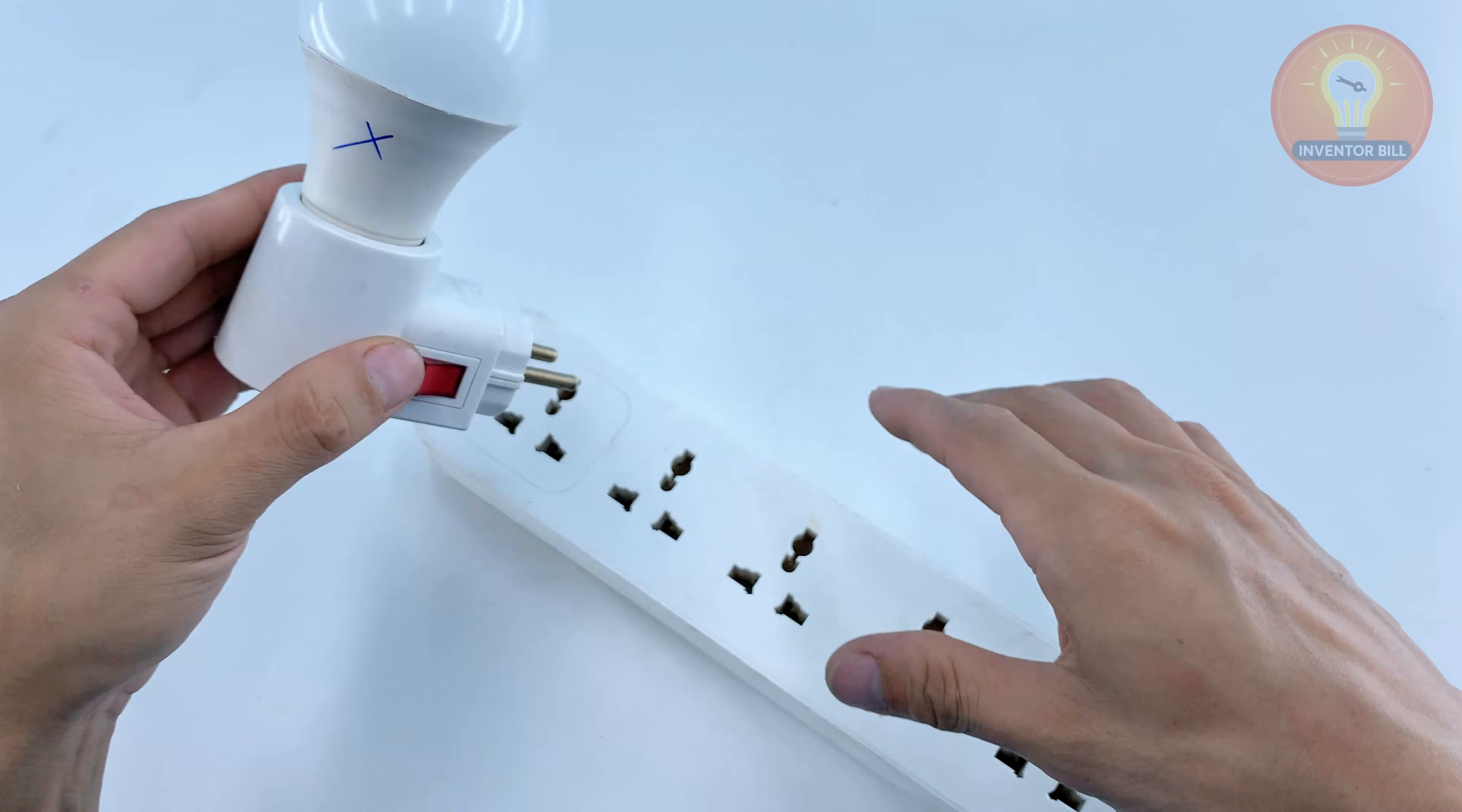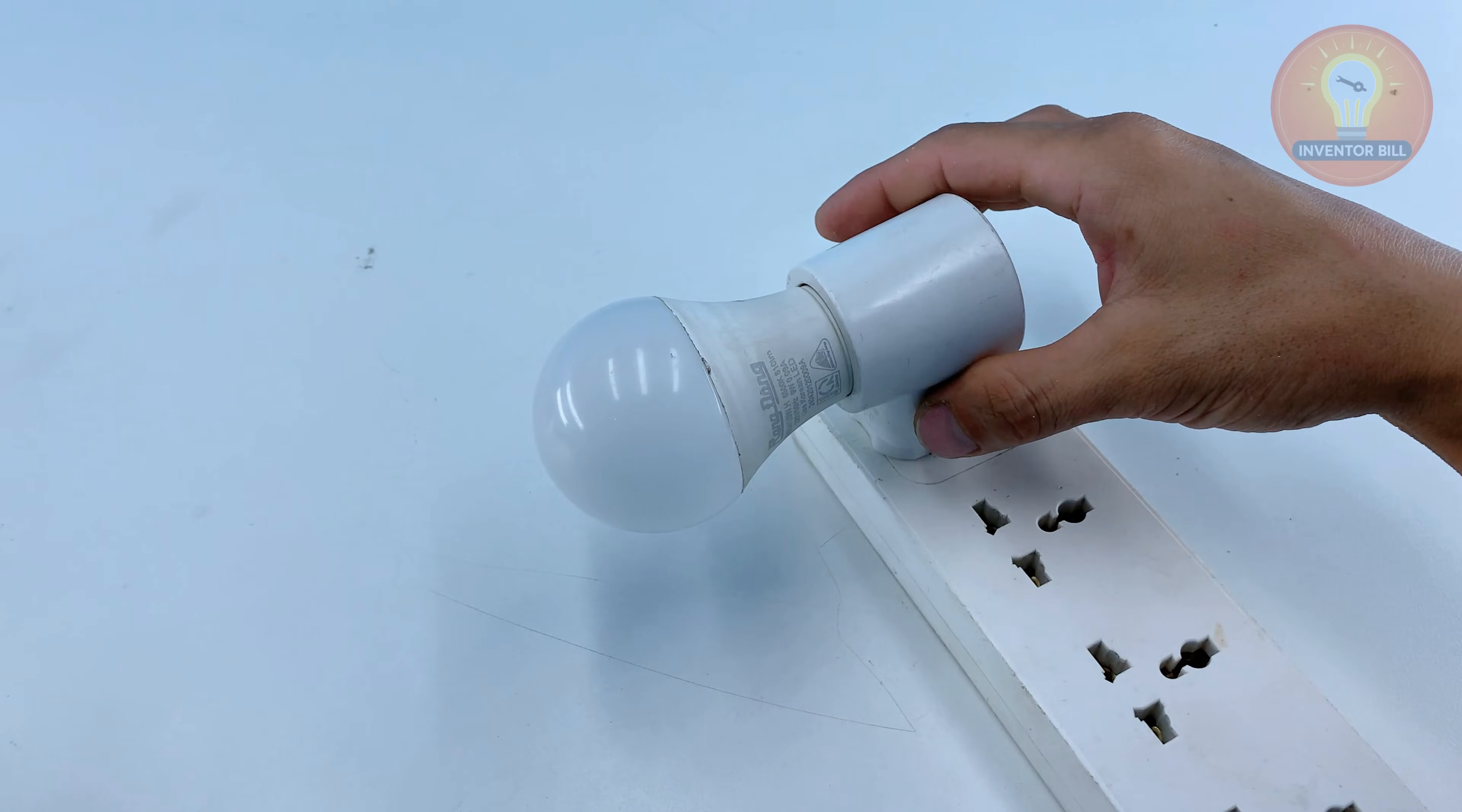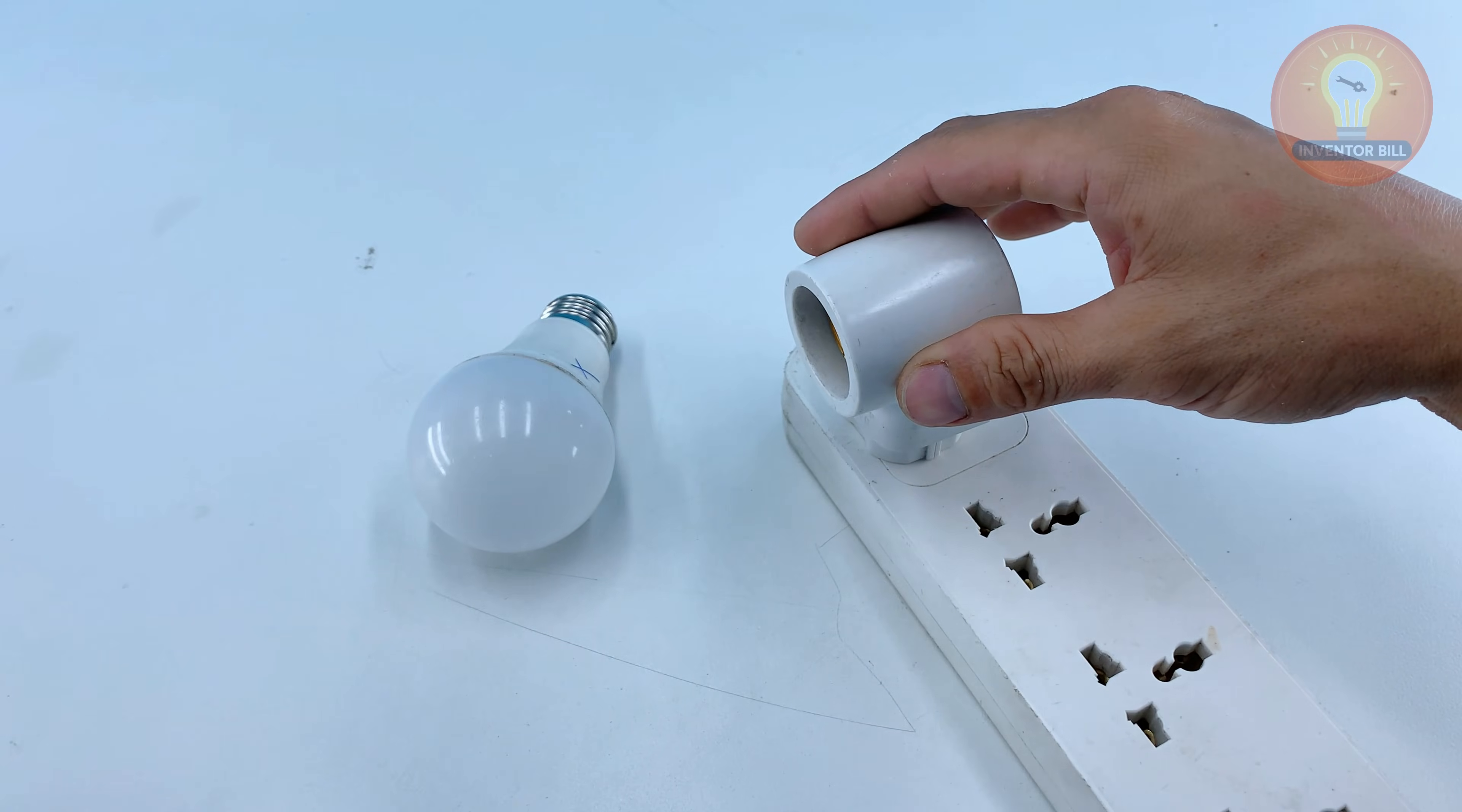When you screw the bulb into the socket again, keep your hand on the switch and power it on. If the repair took, the light will come on right away and stay steady. It's a simple fix that brings a dead bulb back to life and saves you from throwing out something that can still work.